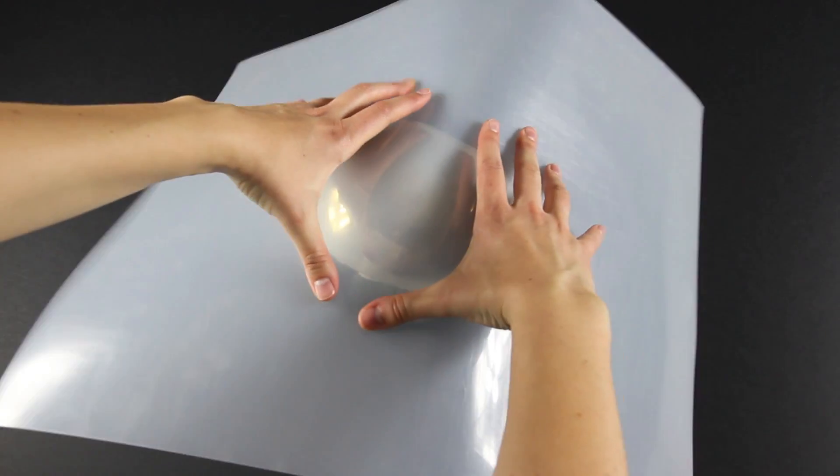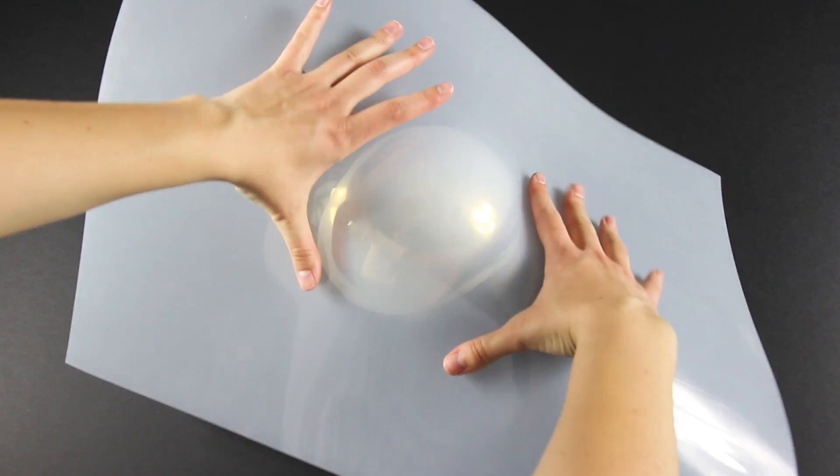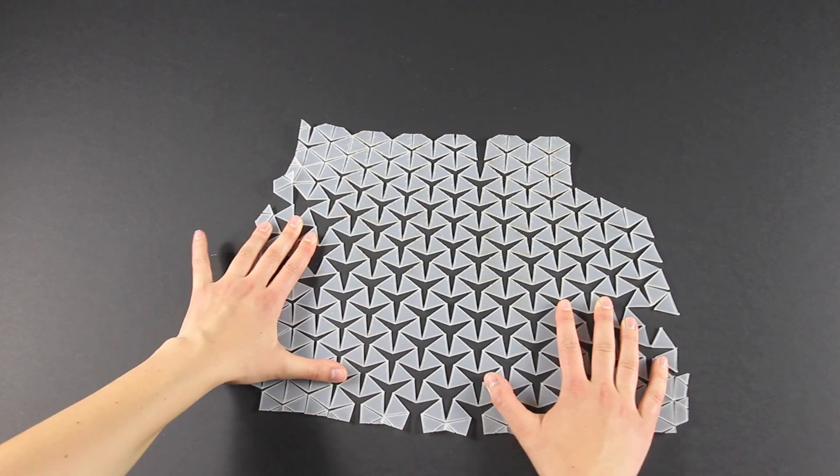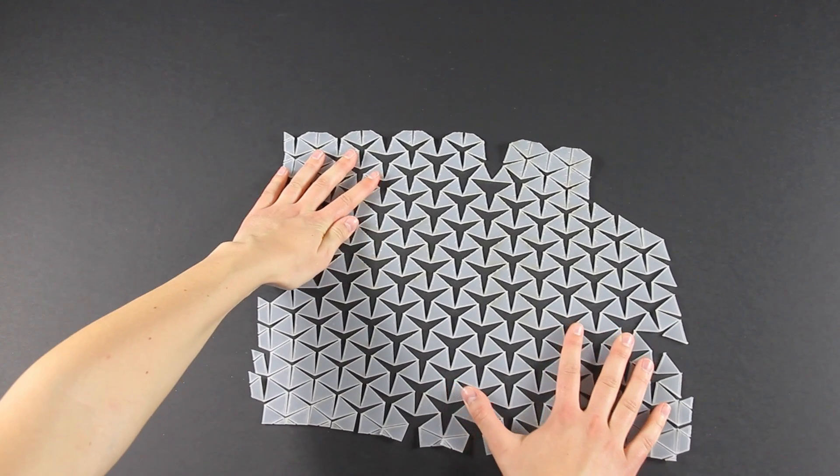Even a simple shape like a sphere cannot be approximated by a flat piece of inextensible but flexible material. But by inserting a specific pattern of cuts in the same material, we get much more freedom.